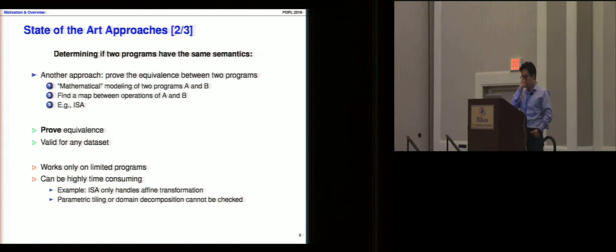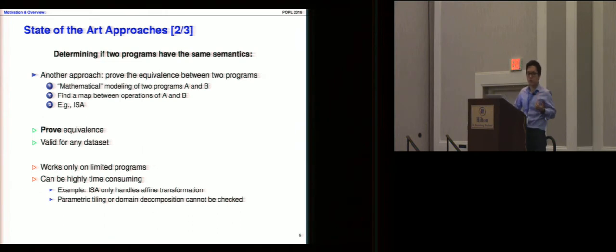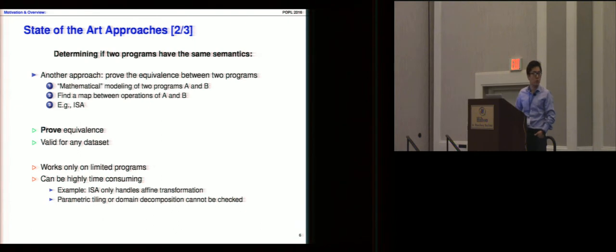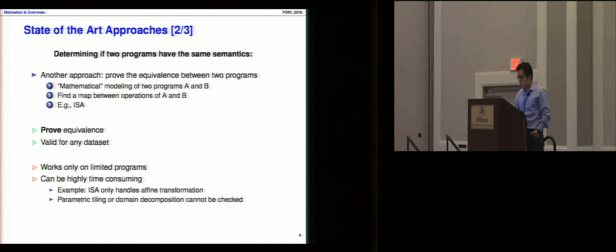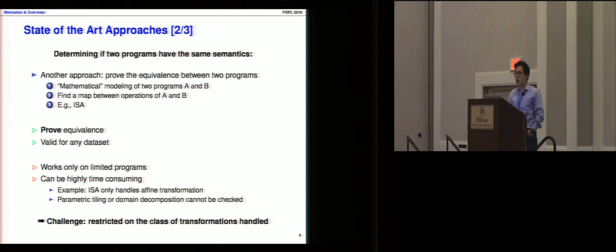The problem with the output-checking approach is that it is difficult or impossible to find a dataset which exposes all bugs in the transformed program. The second approach is to prove the equivalence of two programs by building a model and finding a map between operations of the transformed and original programs. For example, the ISA tool developed by Dr. Suwen in 2012 proves equivalence very generally and is valid for any dataset, but it only works on affine programs and cannot handle parametric tiling or domain decomposition.